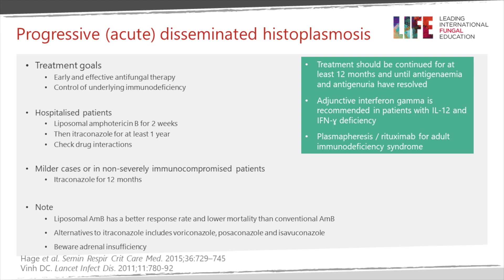As an example, antiretroviral therapy in patients with HIV is started at the same time as treatment for acute disseminated histoplasmosis. Treatment is typically given for at least 12 months, and if you can measure antigen in the blood or urine, it's helpful to check that this disappears.